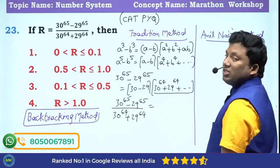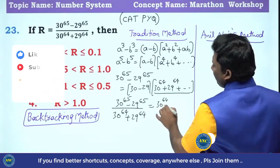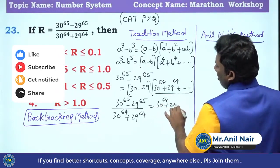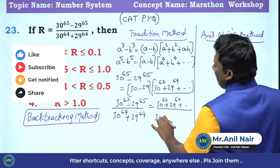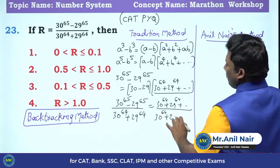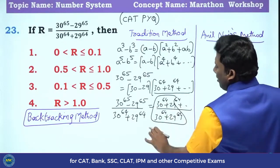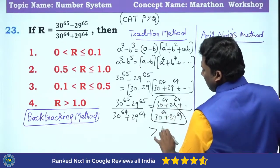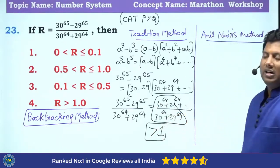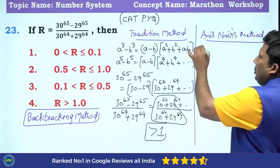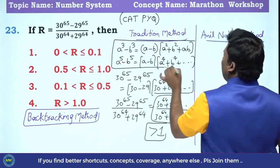We get: 30 power 64 plus 29 power 64 plus a positive value, divided by 30 power 64 plus 29 power 64. That equals 1 plus something positive, so the answer is greater than 1. This is based on algebraic identities.